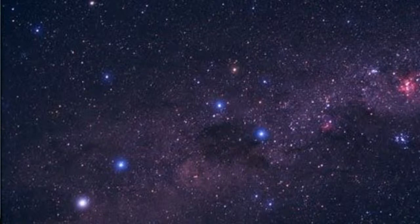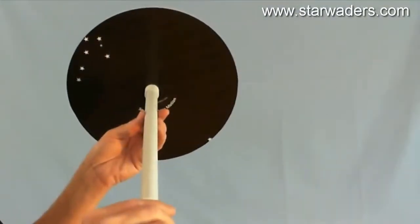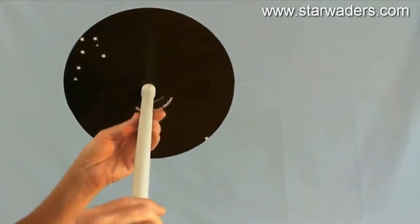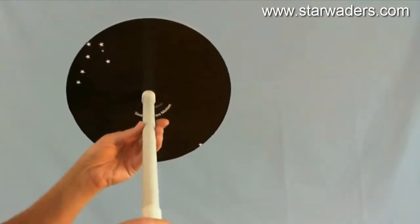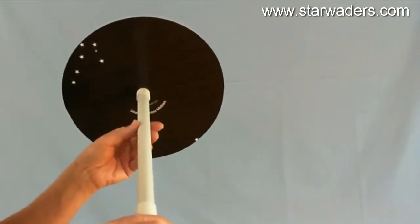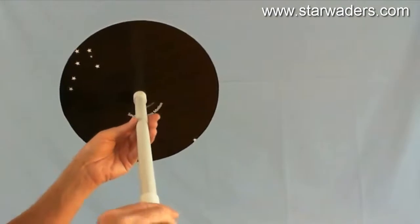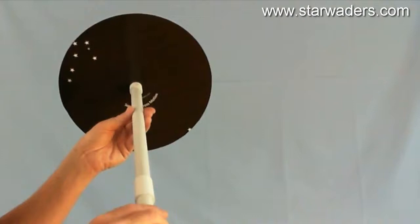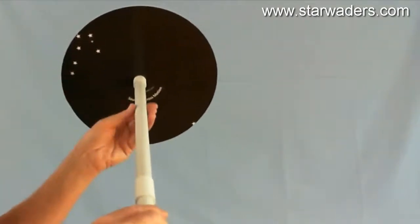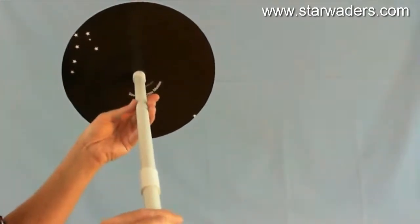So, what we've got to imagine is that we are actually in a situation where we are outside in the night sky, and we are looking in the southerly direction, where in the sky we can actually see the real Southern Cross. So, the first thing we do is we try and orientate this model, so that this Southern Cross is orientated in the same way as the real Southern Cross.